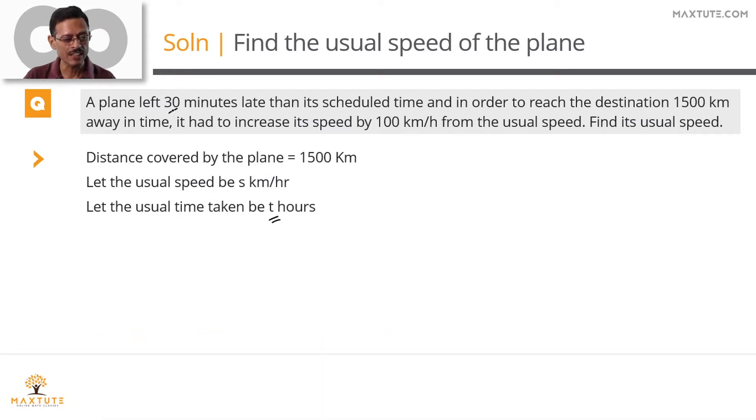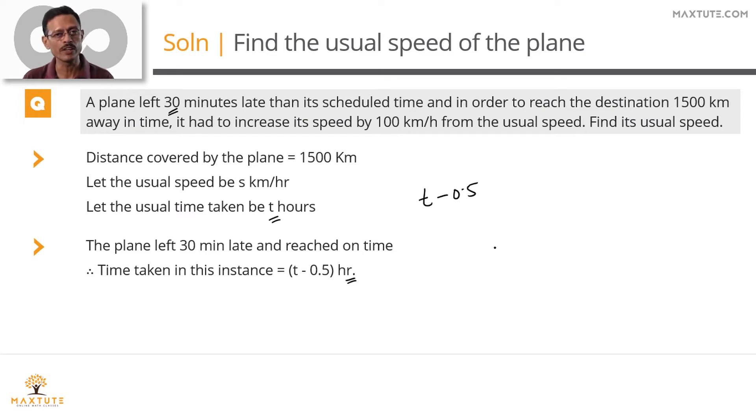This time, the flight left, the plane left 30 minutes late and it reached on time which essentially means that it is covering the distance in half an hour lesser time. So time taken this time will be if the usual time is t, it's going to be half an hour lesser than that. So the time taken in this instance is equal to t minus 0.5 hours.